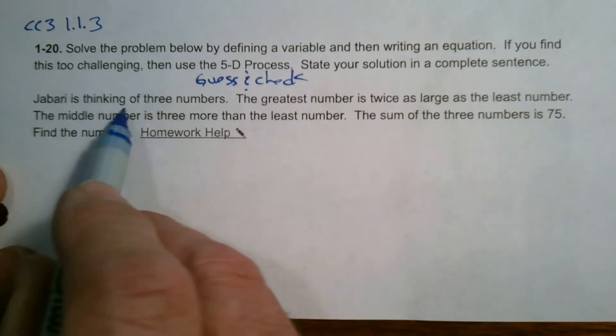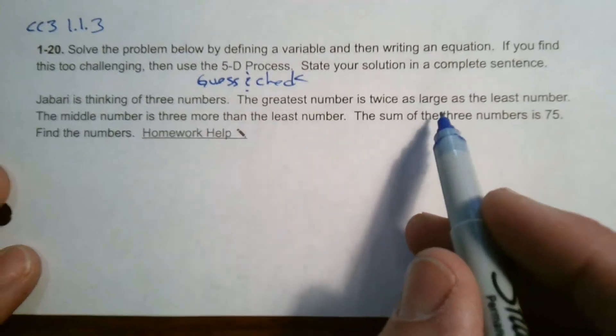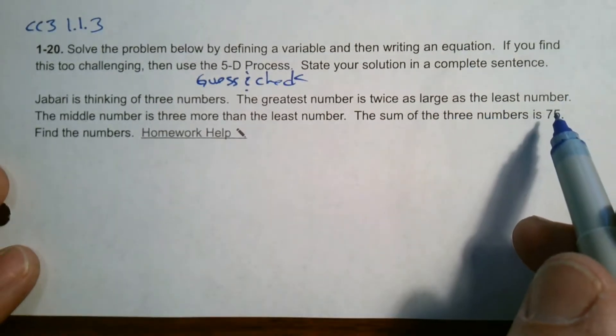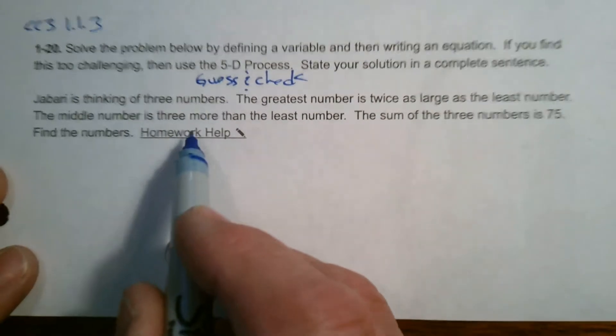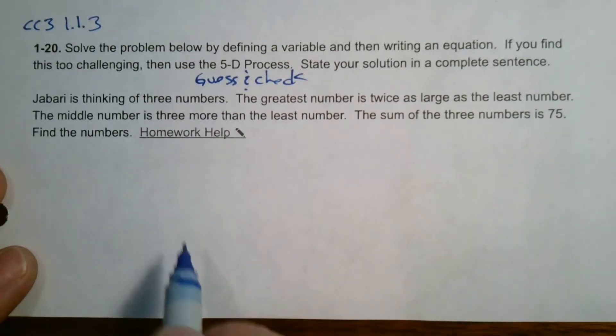The problem: Jabari is thinking of three numbers. The greatest number is twice as large as the least number. The middle number is three more than the least number. The sum of the three numbers is 75. Find the numbers.